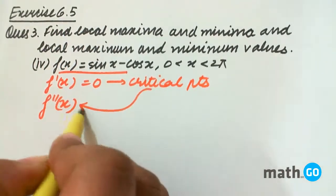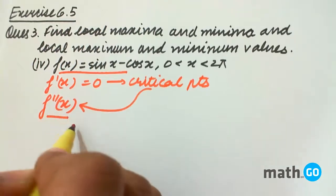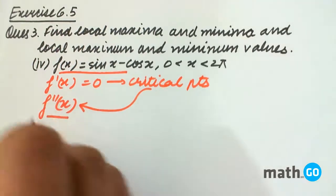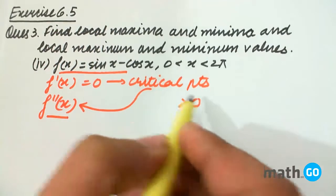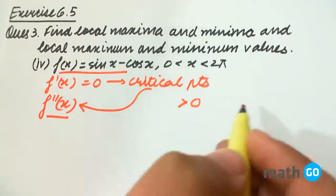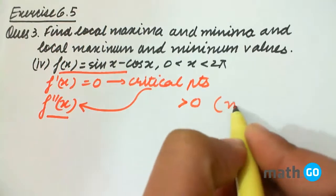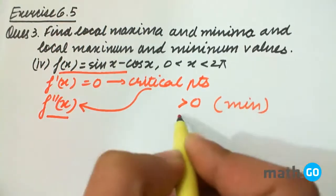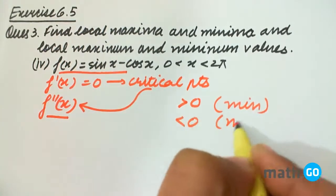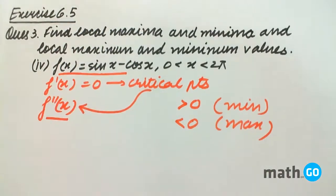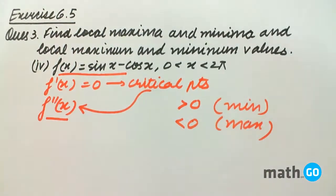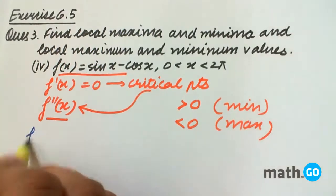Once we get the critical points, we calculate f''(x) and put these critical points into this f''(x). If this f''(x) is greater than zero after putting the critical point, then it is a point of minima. And if it is less than zero, it is a point of maximum.